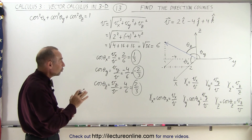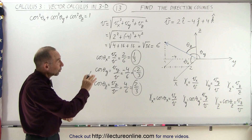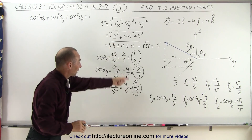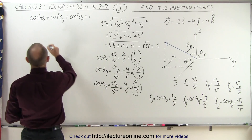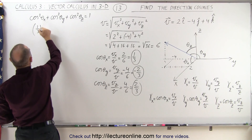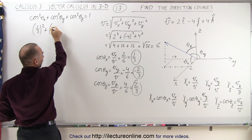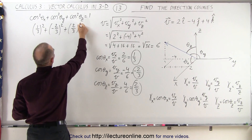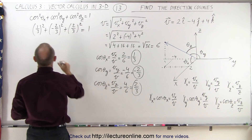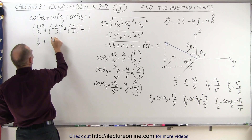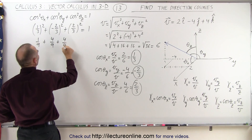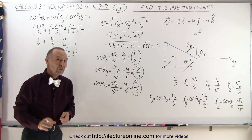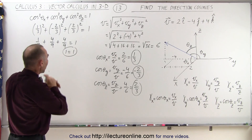Let's first check to see if we have the correct values by plugging them into the sum-of-squares equation. We have 1 third squared plus negative 2 thirds squared plus positive 2 thirds squared — that should equal 1. This becomes 1 ninth plus 4 ninths plus 4 ninths, which equals 1. Sure enough, 1 equals 1, so we verify that squaring the direction cosines and adding them together gives 1.